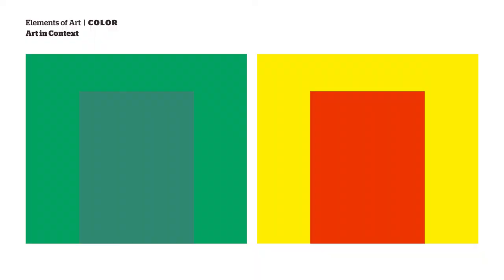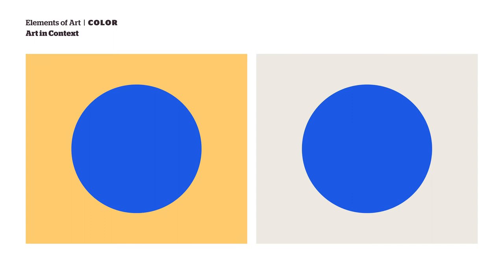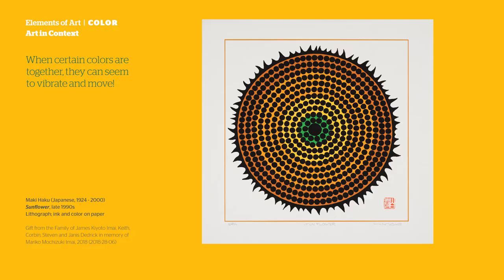How we experience color depends on that color's surroundings. What is different here? When certain colors are together, they can seem to vibrate and move.